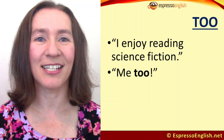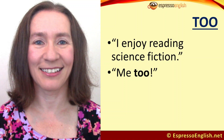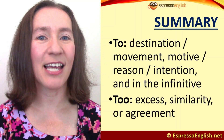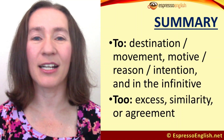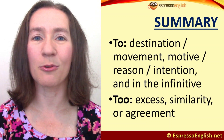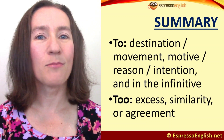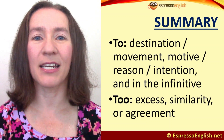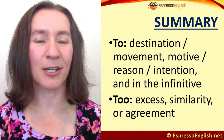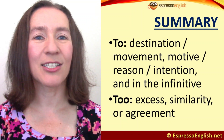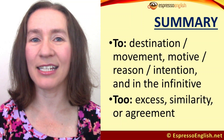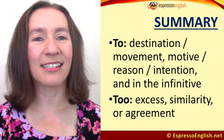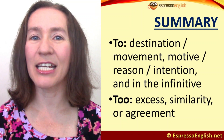So to recap: 'to,' spelled T-O, is used for destination or movement, motive, reason or intention, and in the infinitive form of verbs. And 'too,' spelled T-O-O, is used for excess, similarity, or agreement.